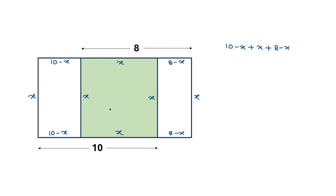If we double that, we get both large sides of the rectangle. The width of this rectangle is x and this is also x, so that gives 2 times x. This is the perimeter of the rectangle: 2 times (10 plus 8) gives 18, and the negative x and positive x cancel, leaving a negative x, while the 2 times x remains.